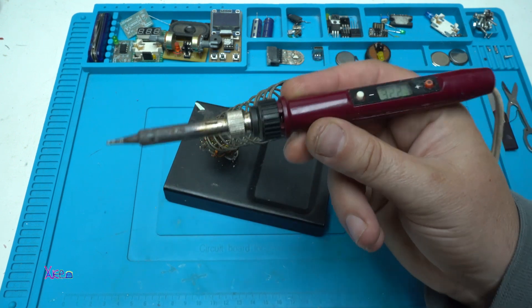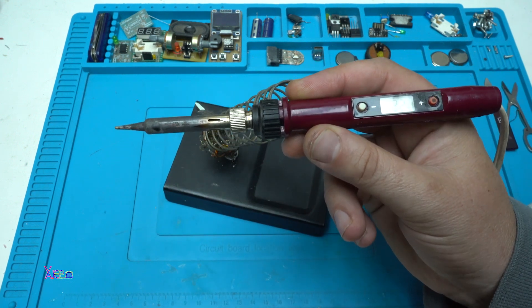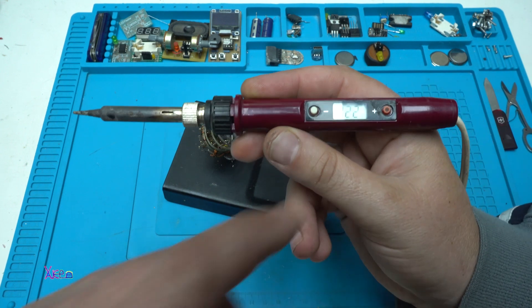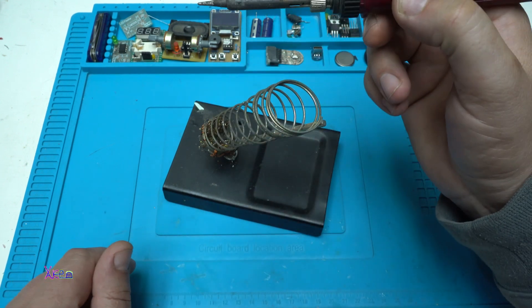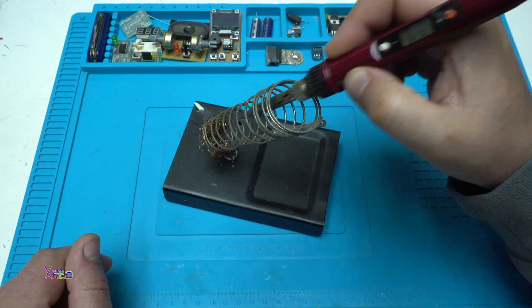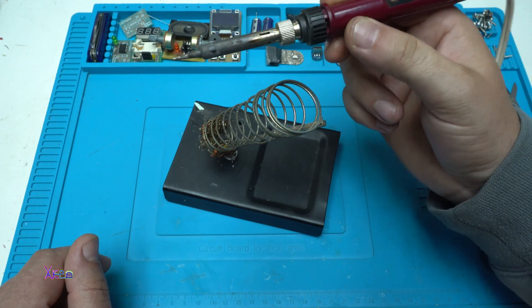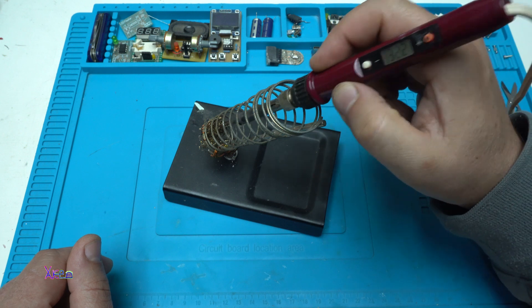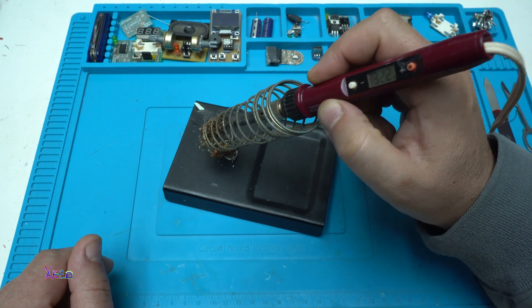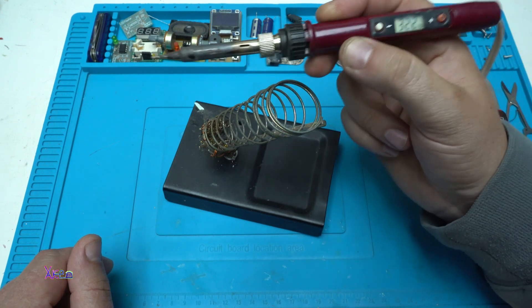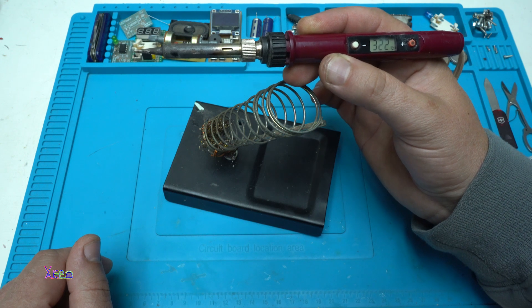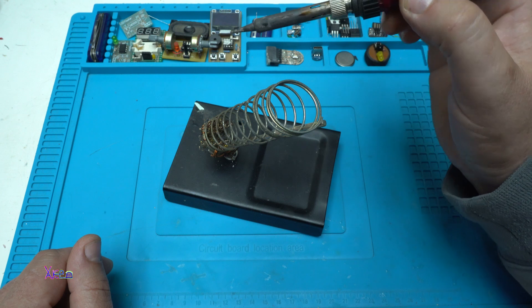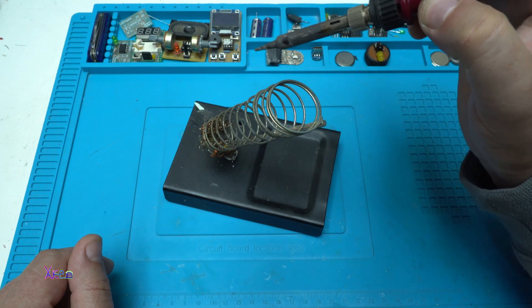I am using this cheap Chinese soldering iron with digital control on the handle, but very often I forget the soldering iron to burn for hours. So I decided to make a timer that after 30 minutes, 45 minutes, or 1 hour, the soldering iron will automatically turn off.